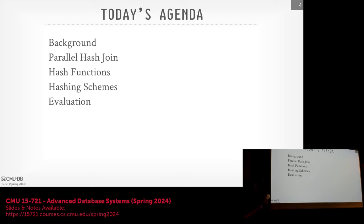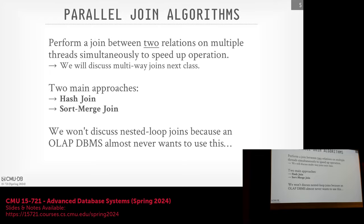We'll talk about the background of parallel join algorithms or high-performance join algorithms from the last 30 to 50 years. Then we'll talk about the basic building blocks to do a parallel hash join, different hash functions and hashing schemes, and a high-level overview of the evaluation for the paper you guys read. I understand the paper was a bit inscrutable for some because there's background material you may not have — I'll try to cover that as we go along.